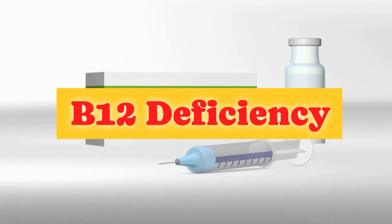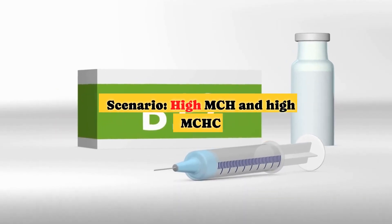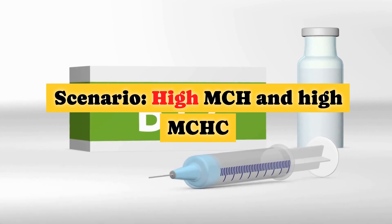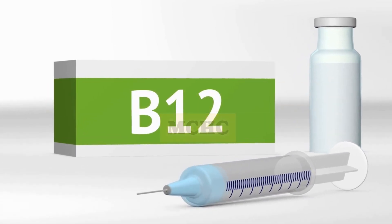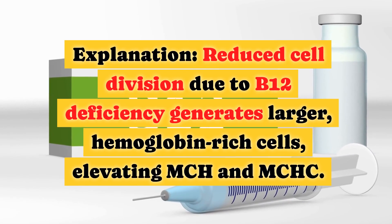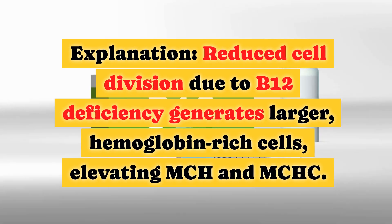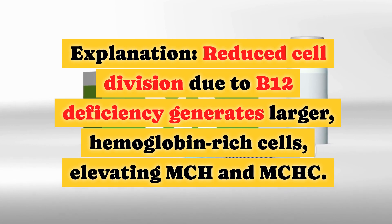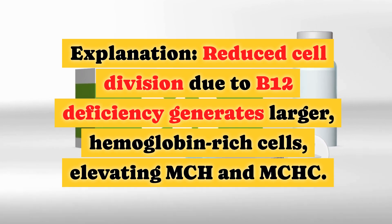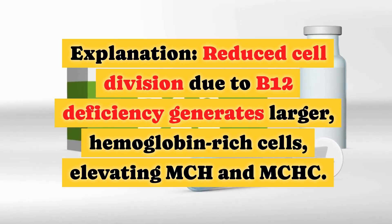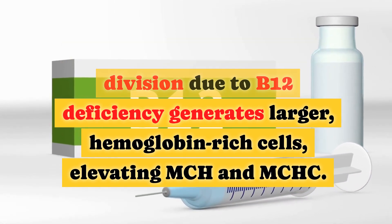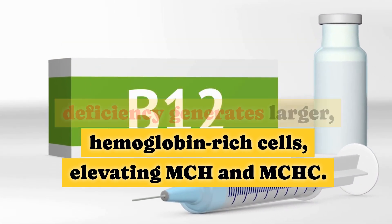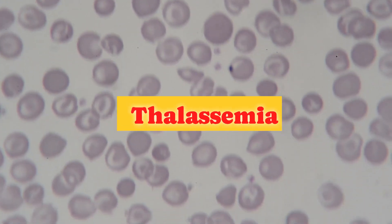B12 Deficiency Scenario — High MCH and High MCHC. Reduced cell division due to B12 deficiency generates larger, hemoglobin-rich cells, elevating both MCH and MCHC.